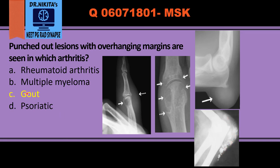So the features of gout are: punched out lesions with overhanging margins, preserved joint space, maintained bone density with no osteopenia, olecranon bursitis, and calcified tophi. The most common joint involved is the first metatarsophalangeal joint — that is the great toe. Gout is caused by monosodium urate (MSU) crystal deposition, which is negatively birefringent.